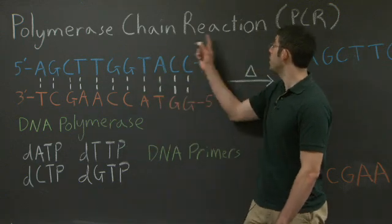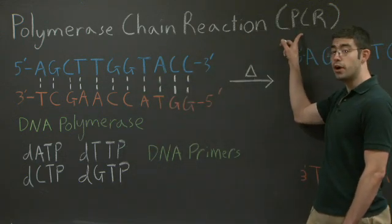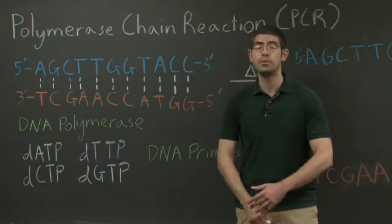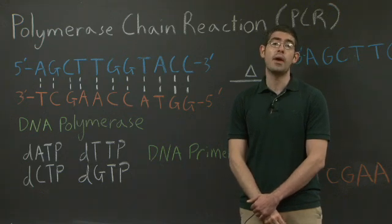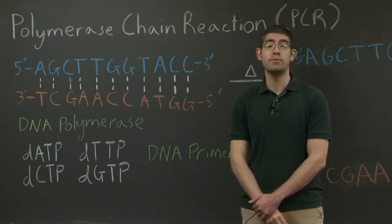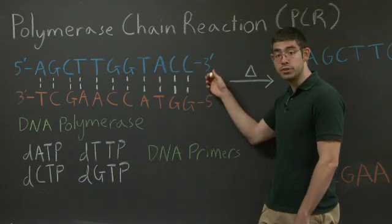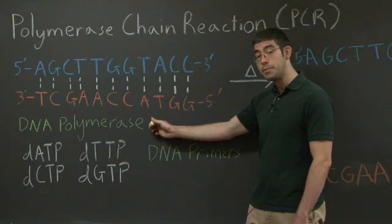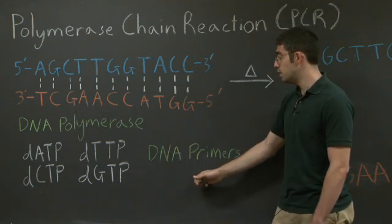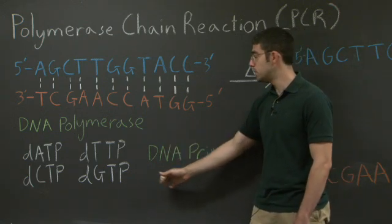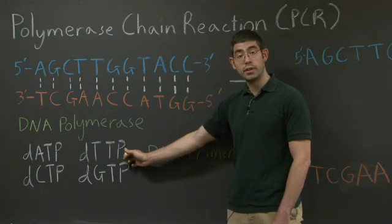The polymerase chain reaction, also known as PCR, has many uses. One of the most common uses is to amplify a desired section of DNA. What you need for the reaction is your DNA sequence of interest, DNA polymerase, DNA primers, and then four different nucleotides.